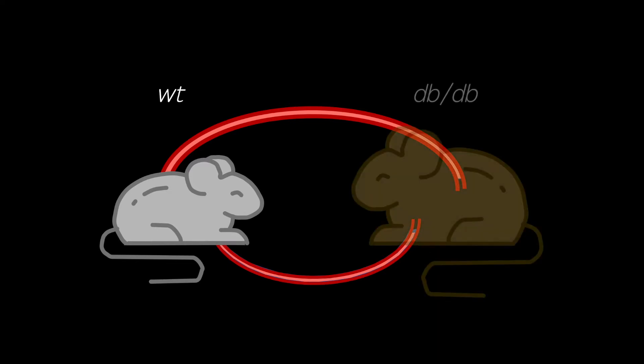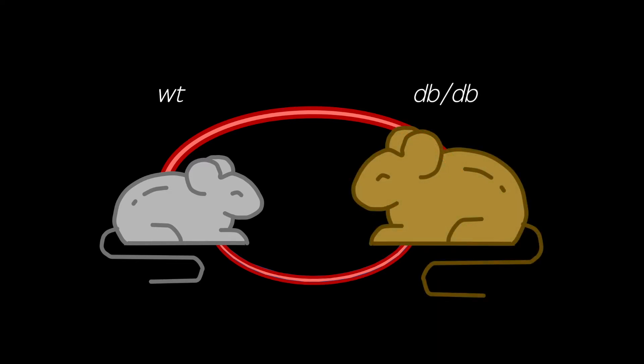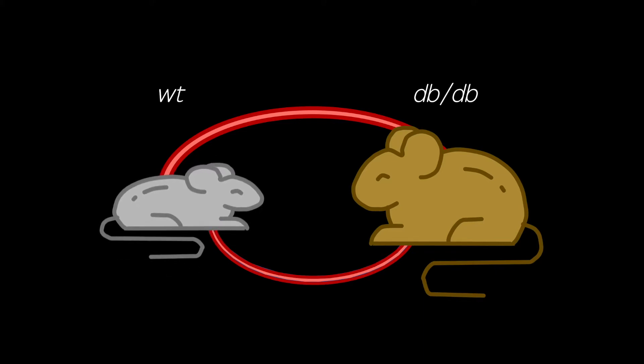The parabiosis connection of a wild-type and a DB-DB mouse results in the wild-type mouse losing weight and often dying. This is because the DB-DB mouse produces large quantities of leptin as it lacks leptin receptors to mediate any negative feedback mechanisms. This means that the wild-type mouse gains large quantities of leptin, losing its appetite and wastes away.